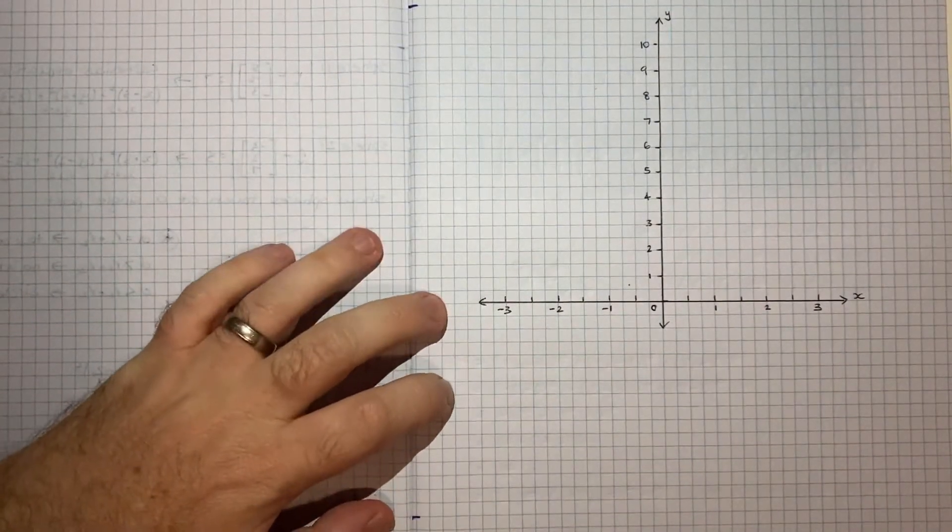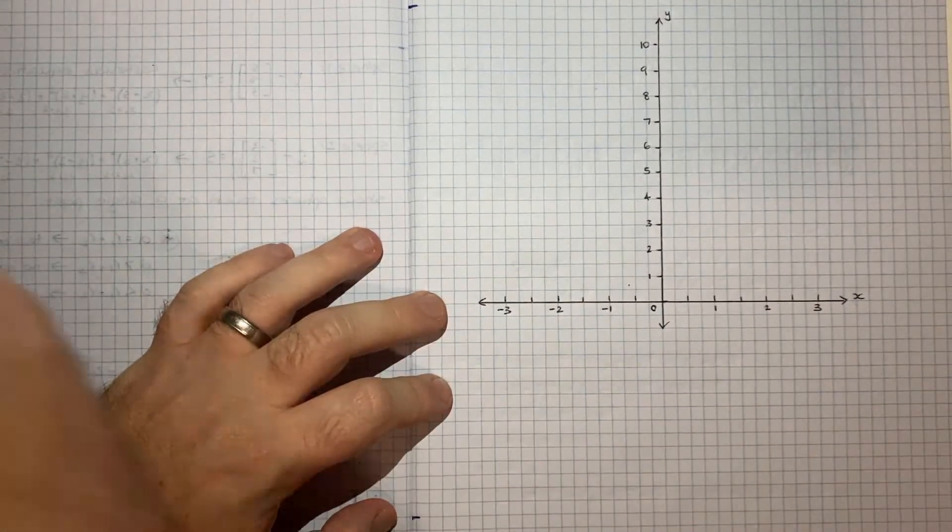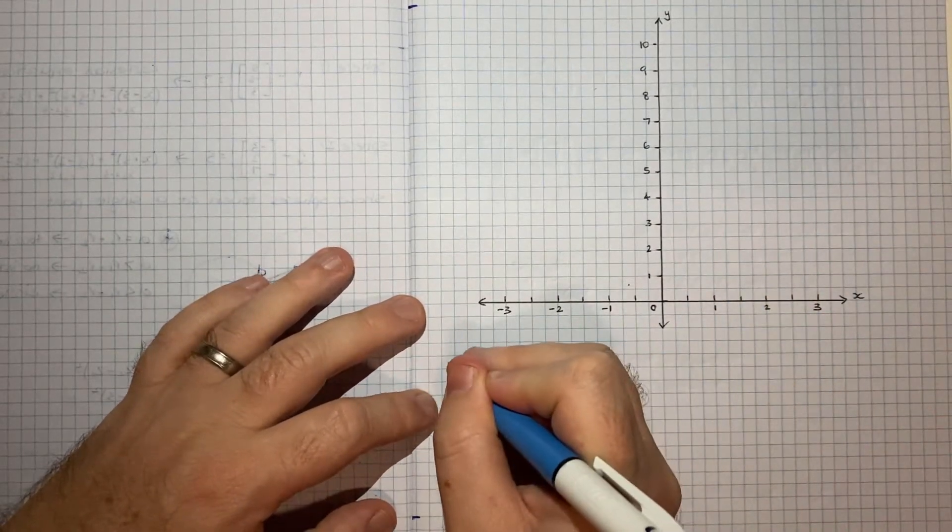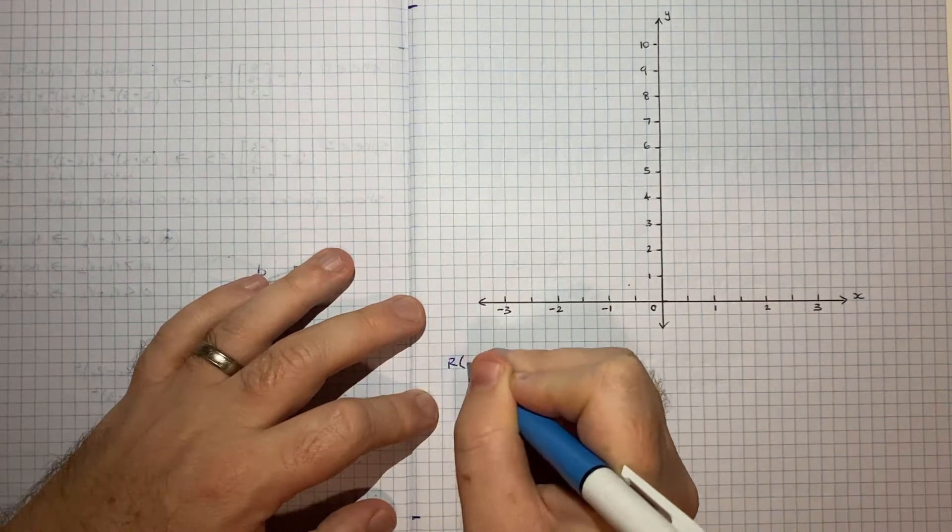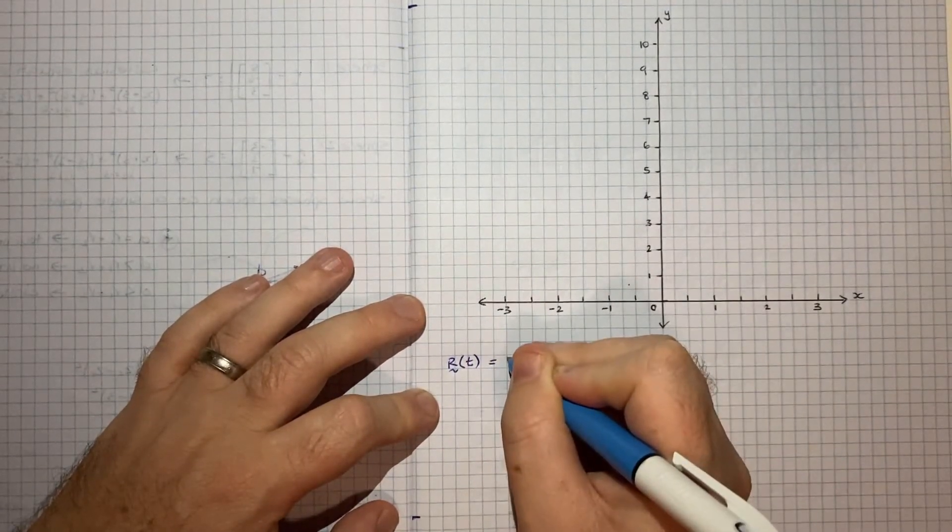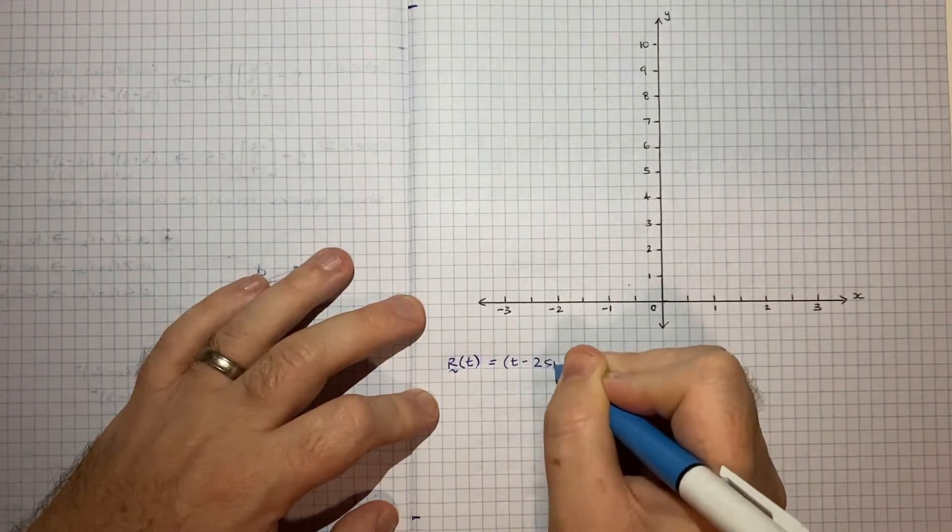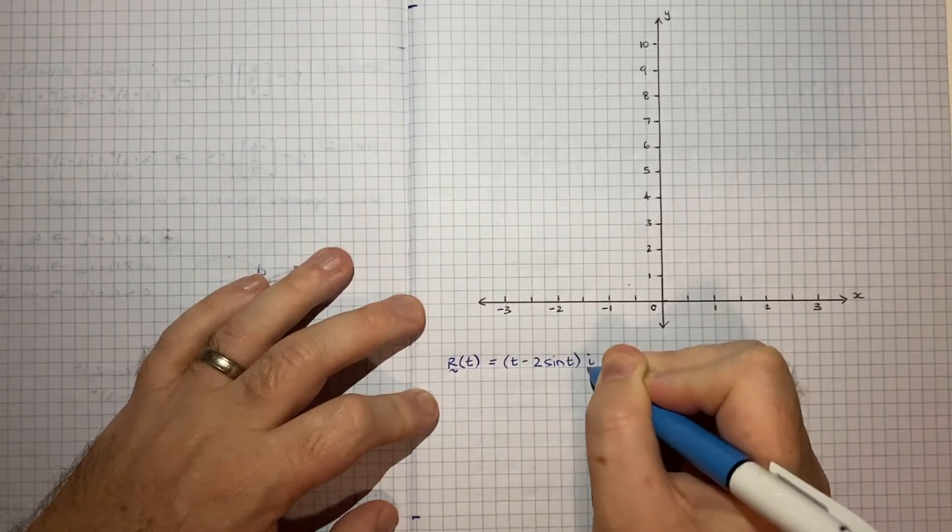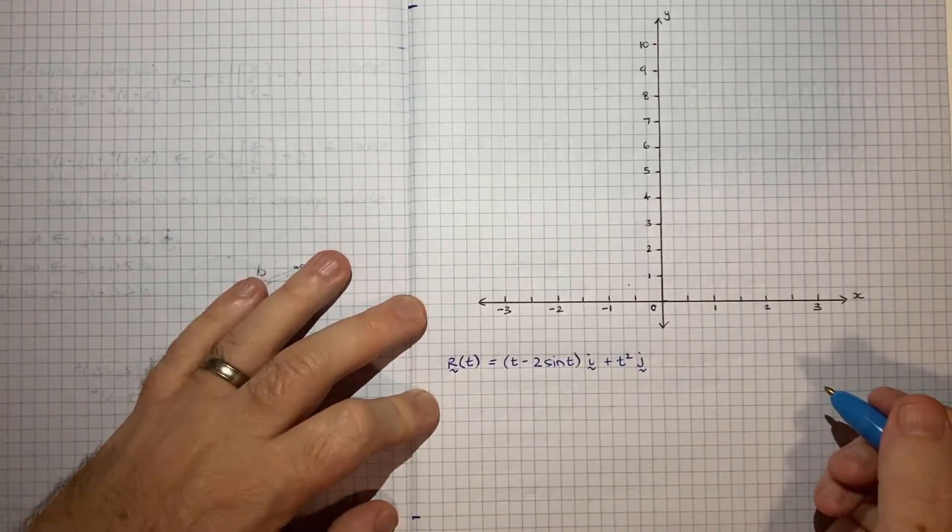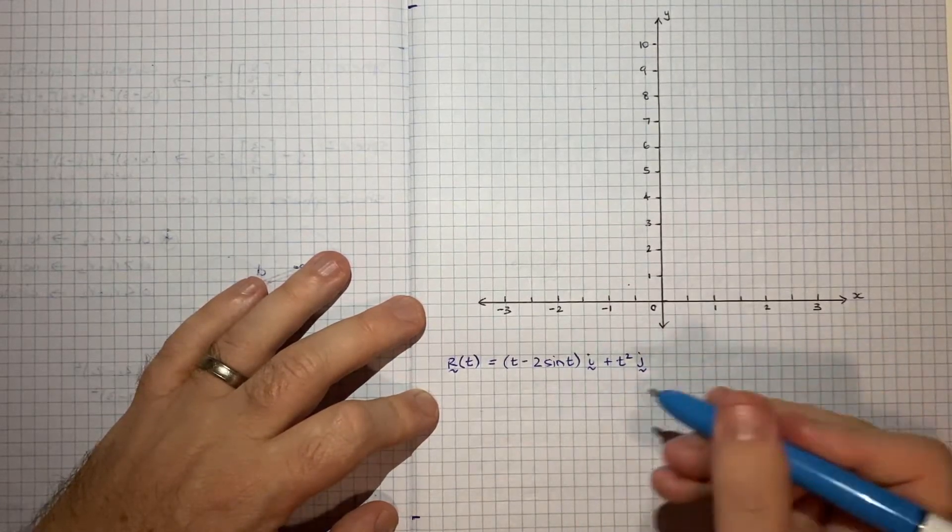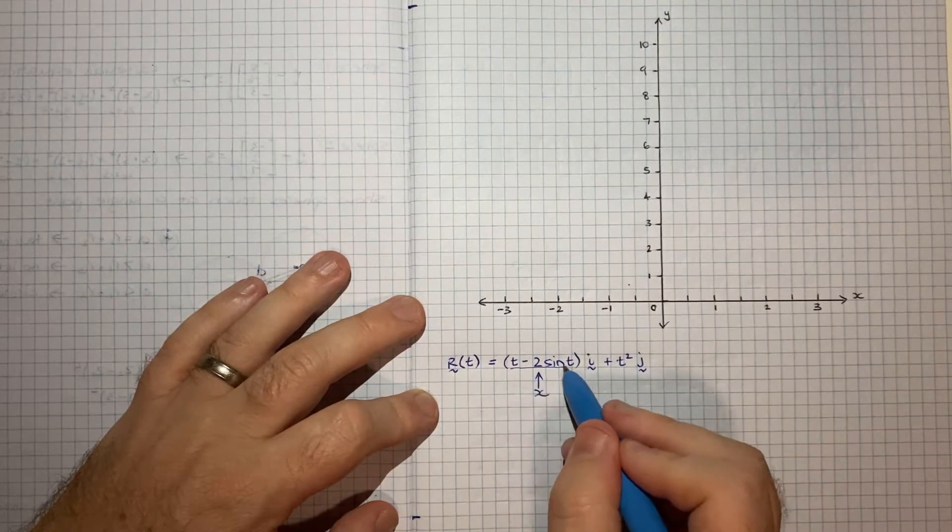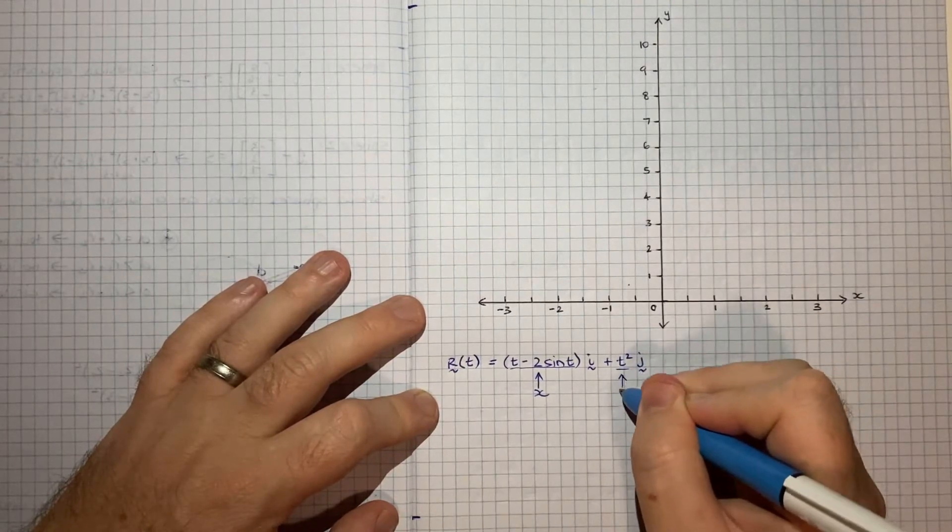In preparation I've created an axis here and what I might do is I'll just note the equation that we're about to go about plotting so our parametric vector equation is r t vector is equal to t minus 2 sine t of i vector plus t squared of j vector. And what that basically means is that for various values of t basically this will give us our x value this part here and this part here will give us our y value.